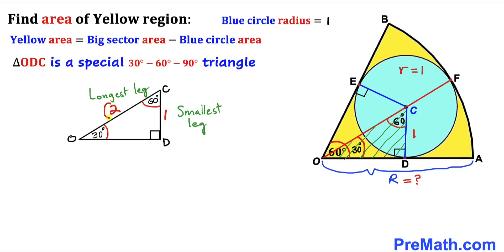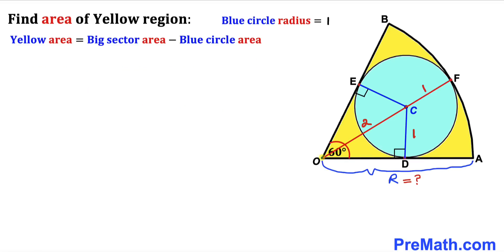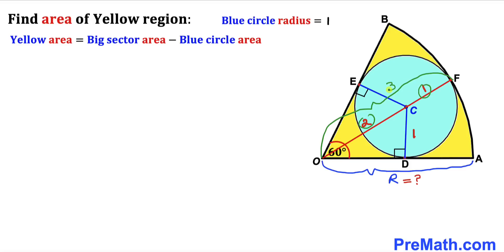Therefore side OC turns out to be 2 units. Since CF is the radius of the blue circle, CF = 1. So the whole length OF = 2 + 1 = 3. Since OF is the radius of the sector, our uppercase R equals 3.